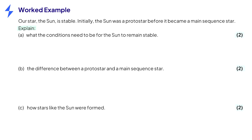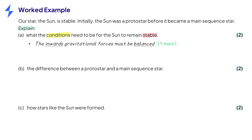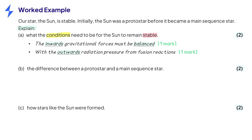Part A asks us to explain the conditions needed for the sun to remain stable. Recall that a main sequence star is stable because it balances the inwards gravitational forces with the outwards radiation pressure from fusion reactions. Note the underlined key words here — these are essential to use to gain both of the marks.